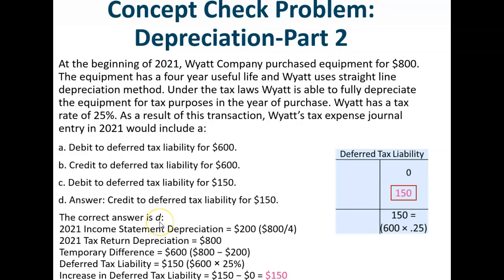The correct answer is D. The income statement depreciation for 2021 is $200 — that's the $800 divided by the four years of straight-line depreciation. The 2021 tax return depreciation is the full $800. So the temporary difference is $600. Multiply that times the 25% tax rate and your deferred tax liability must be $150. It had a zero balance, so to move the zero balance to a $150 credit balance, we have to credit the account for $150. That's why the answer is D.